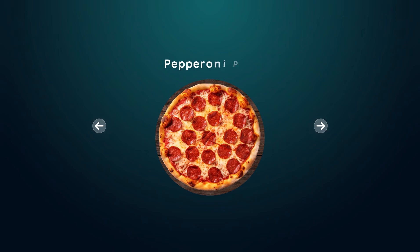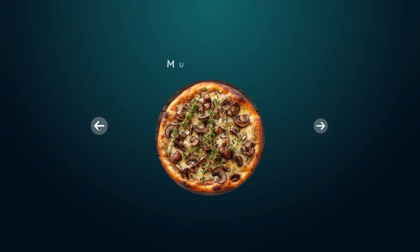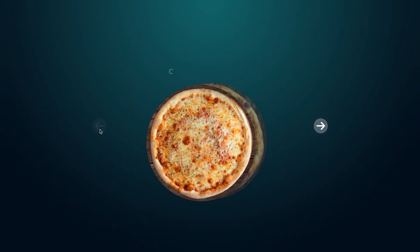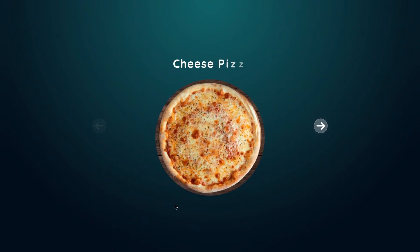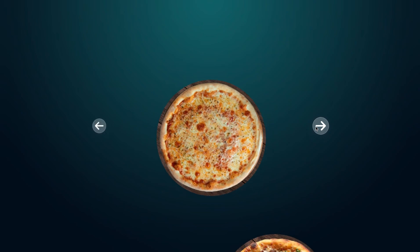Hi everyone! This tutorial shows how to create a circular rotating slider using vanilla JavaScript and CSS. We will also use Splitting.js for the text animation. Let's get started!